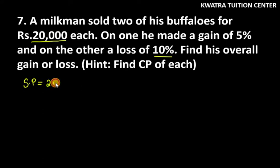For the first buffalo, SP is Rs. 20,000. One has loss and one has gain. Let's find for the loss one first. Loss is 10%.